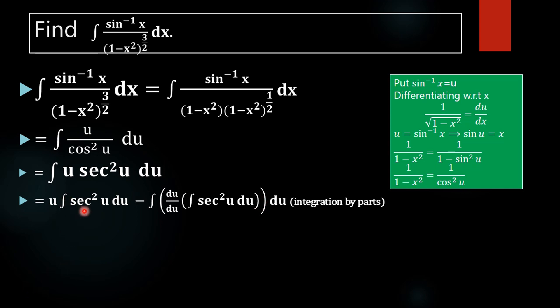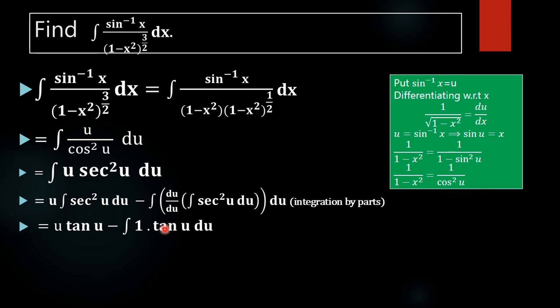The integral of sec squared u is tan u, and the derivative of u with respect to u is 1. So we get u times tan u minus the integral of 1 times tan u du. The integral of tan u du is known to equal log mod sec u plus a constant. Therefore the result is u tan u minus log mod sec u plus C.